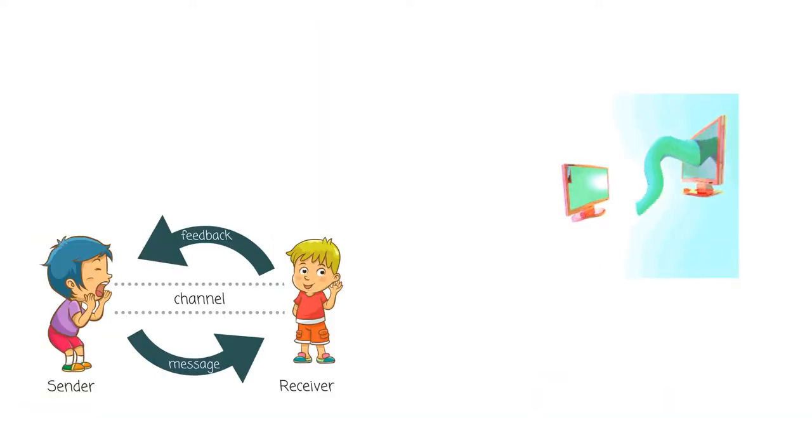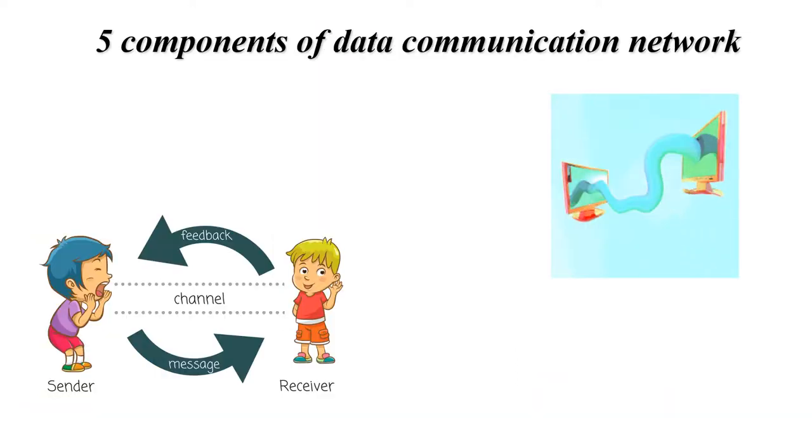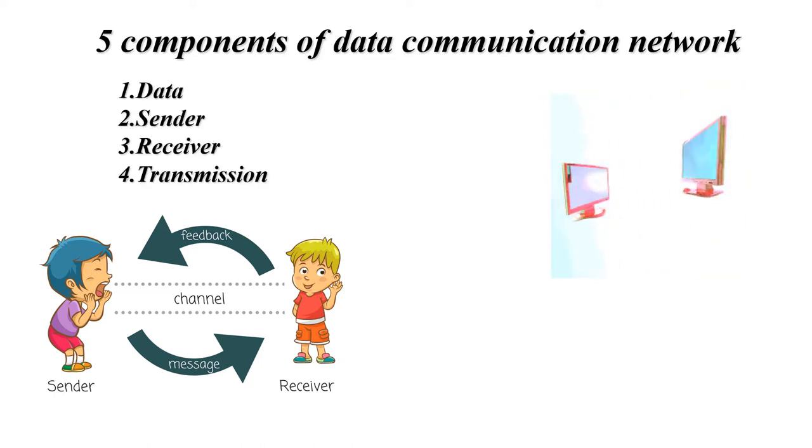Five components of data communication networks are data, sender, receiver, transmission medium, and protocol.